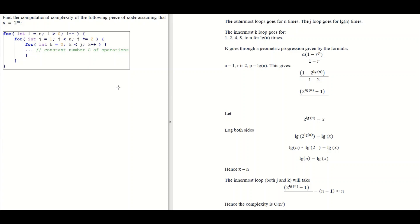A pattern emerges: when j equals 1, 2, 4, 8, k runs for 1, 2, 4, 8 times respectively. If we sum up the total number of times k runs, this turns out to be a geometric progression. The geometric progression formula is: a × (1 − r^p) / (1 − r).